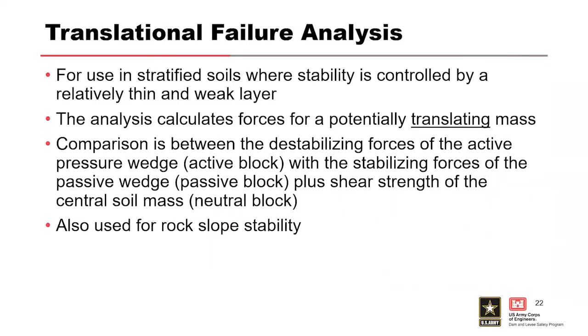Different failure analysis methods exist. The most basic is a translational failure analysis, useful particularly in stratified soils where stability is controlled by a specific weak layer—particularly a relatively thin and weak layer—or limited by a much stronger layer. This is a force balance analysis calculating forces for a potentially translating mass, like a free body diagram without moments. It compares the destabilizing forces of an active pressure wedge with the stabilizing forces of a passive wedge plus the shear strength of a central soil mass.